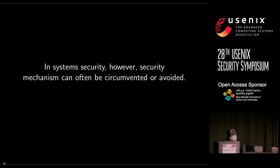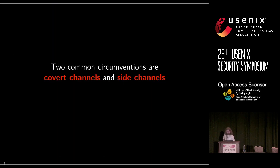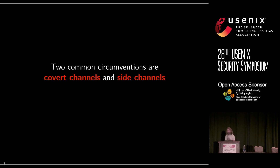However, as we know in security, a security mechanism can often be circumvented or avoided. In the physical world we see a security mechanism and evidence of circumvention occurring around it, and the same thing can happen in our digital systems. Two examples of such are known as covert channels and side channels.